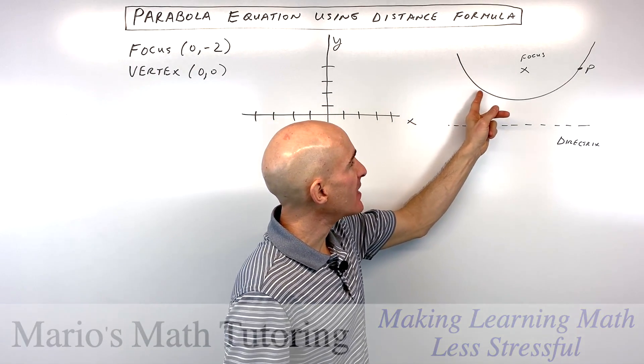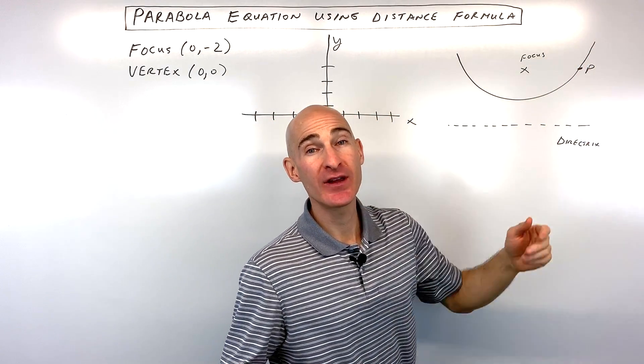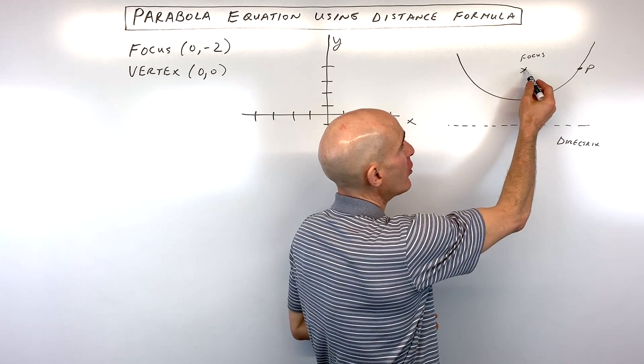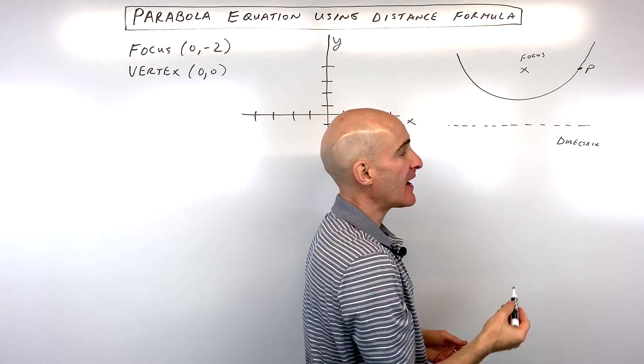Well, a parabola, it's the set of all points that are equidistant from a given point called the focus and a given line called the directrix.